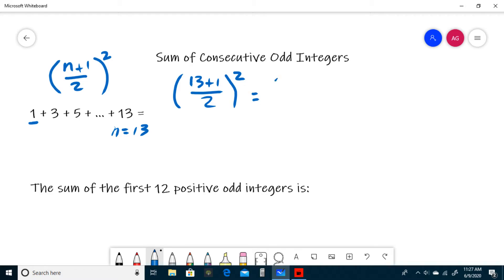13 plus 1 is 14, so we have 14 divided by 2 squared. 14 divided by 2 is 7, so 7 squared. Same thing as 7 times 7 is 49. So 1 plus 3 plus 5 all the way to plus 13 is just going to be 49.